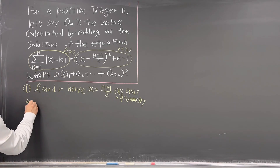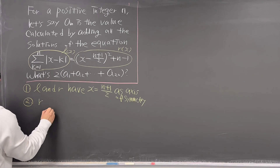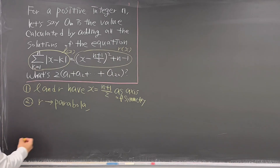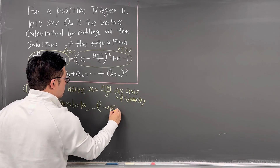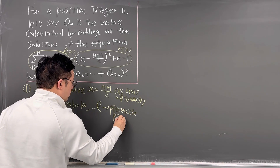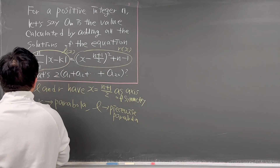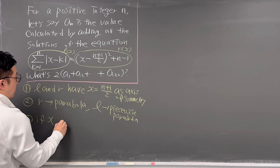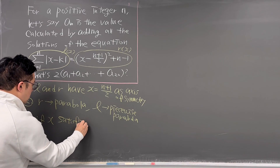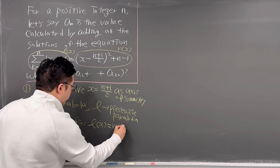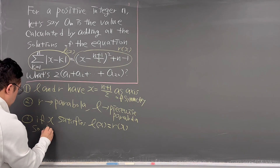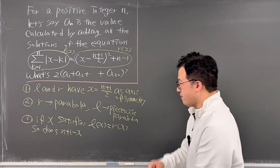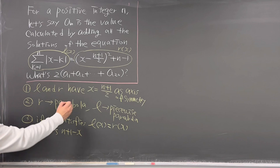Second, for the graphs of R(x) and L(x): R is a parabola, and L(x) is also a parabola but a piecewise one. Third, if x satisfies L(x) = R(x), then so does n+1-x. And fourth, the midpoint has to be (n+1)/2.